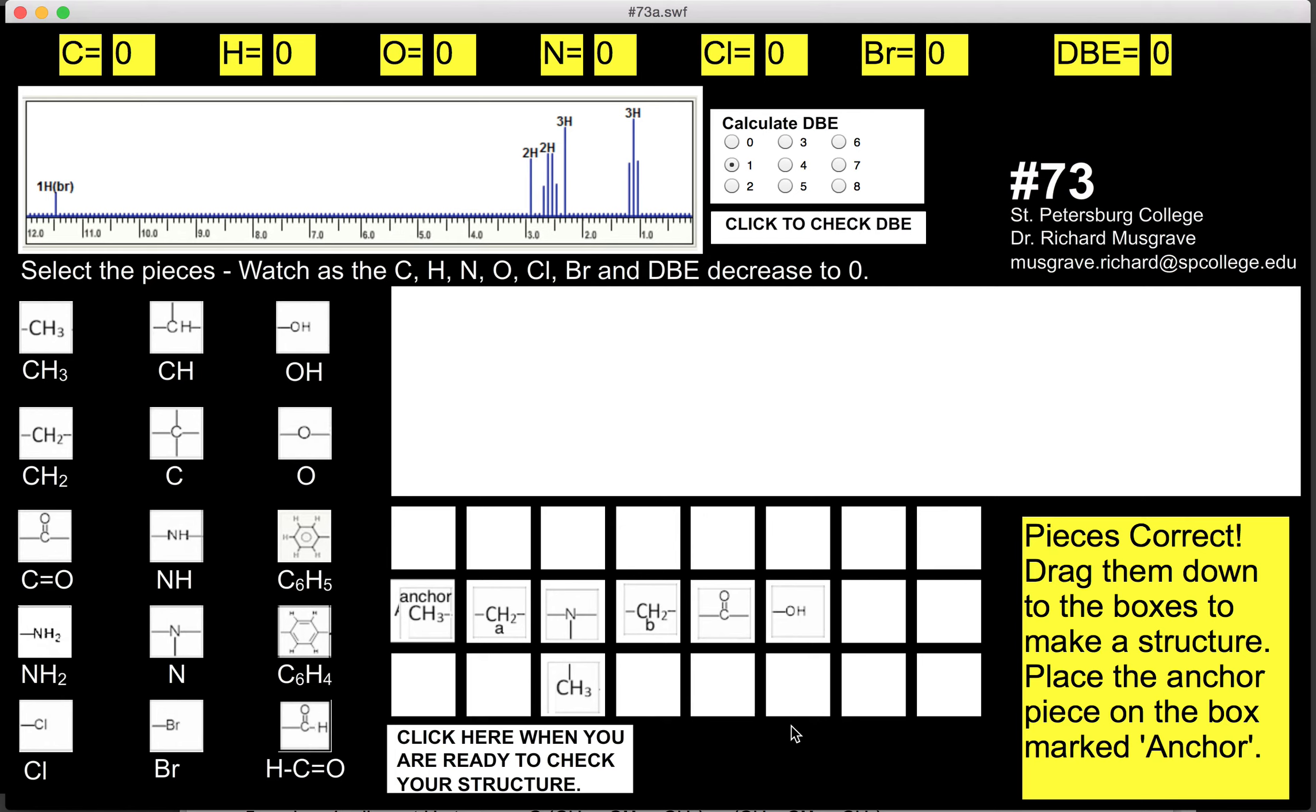There's no other way that we can really put this together and explain these multiplicities that you see here. If you look at the CH2, again you see that it's a single peak, which means it must be adjacent to things that don't have hydrogens on them.